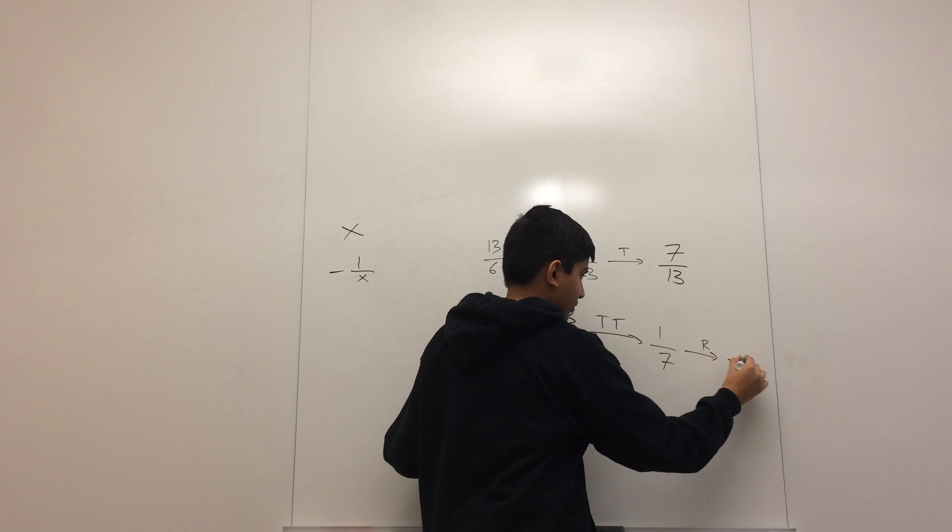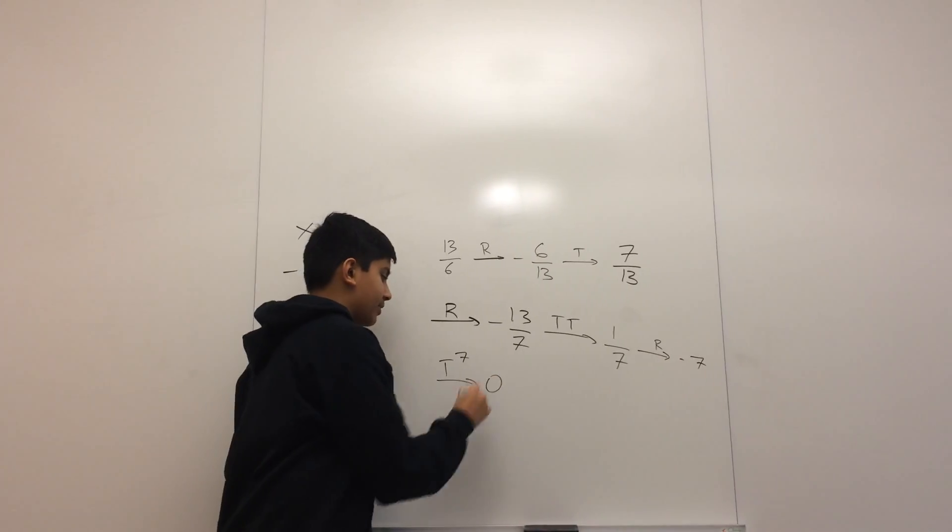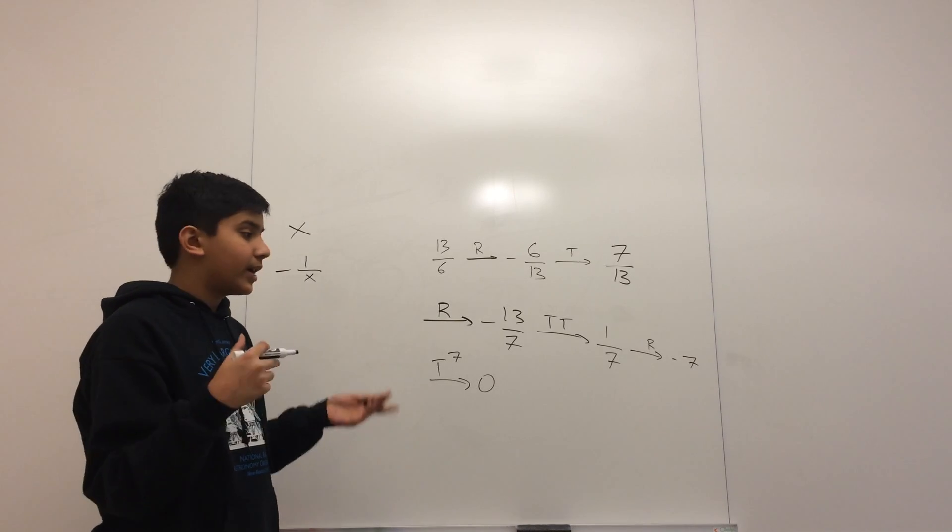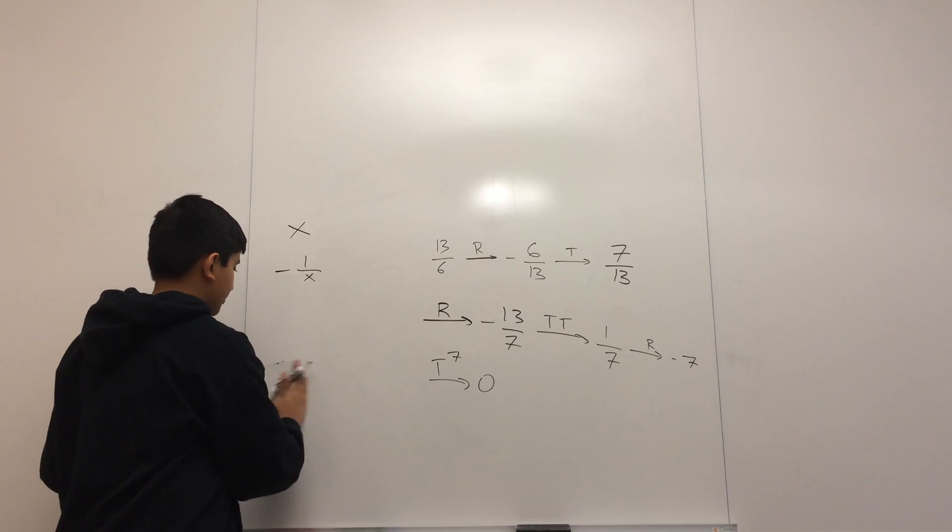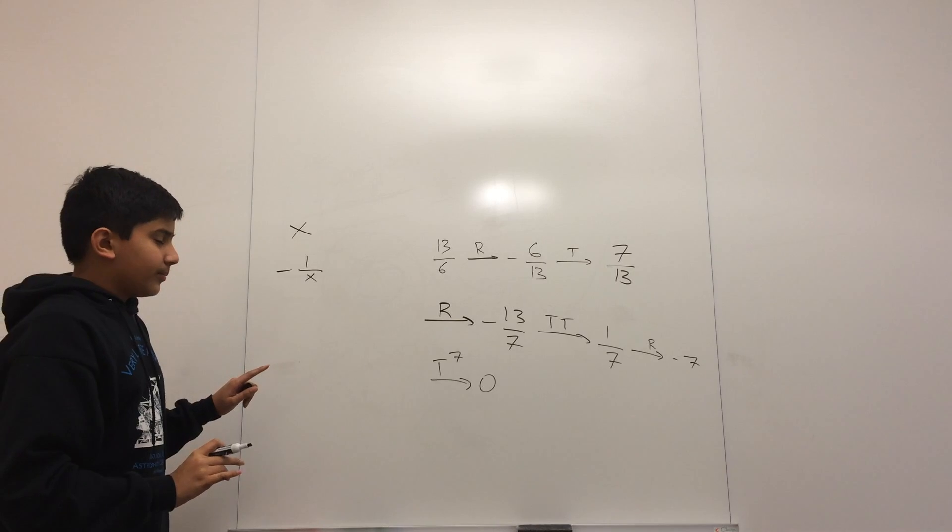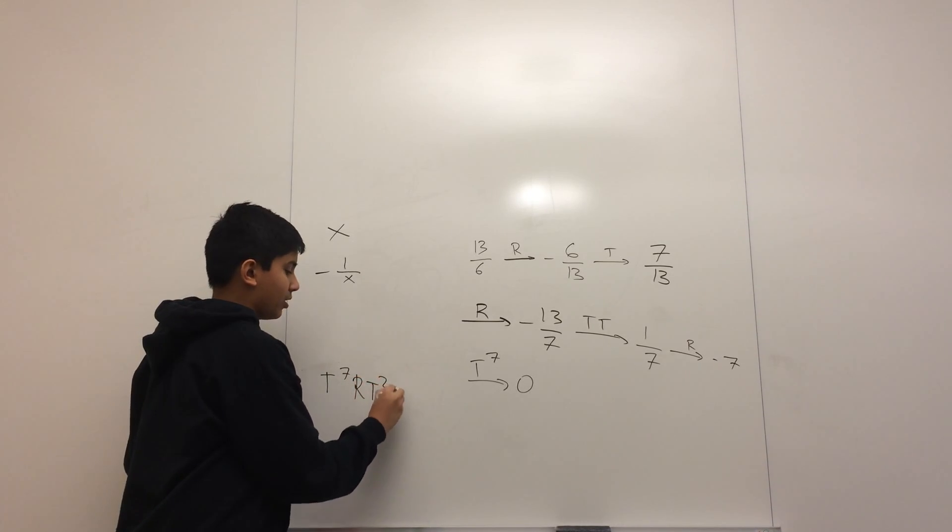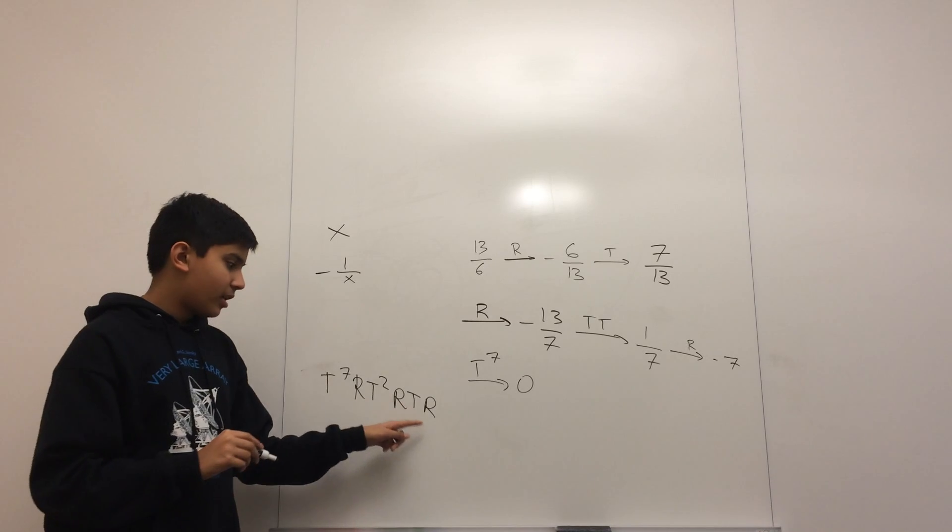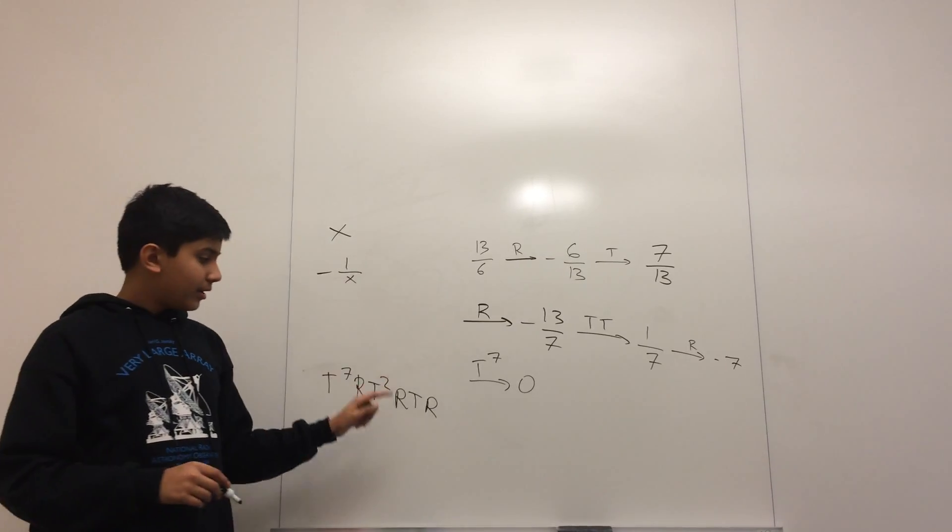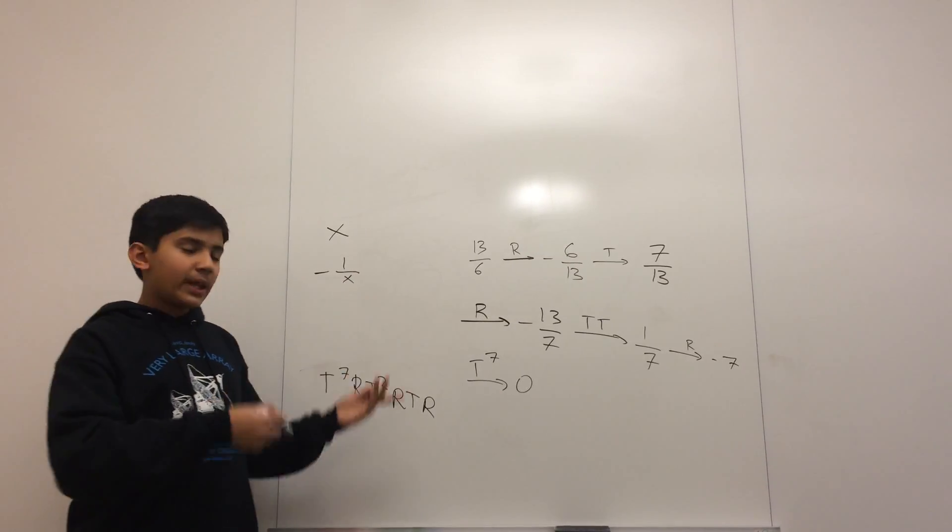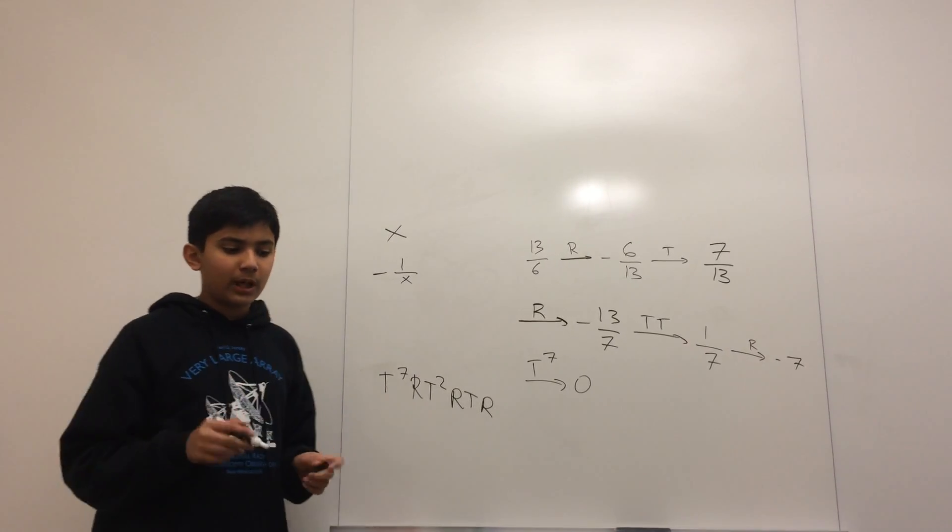Now I'll apply the t move twice, because I need to add one twice to this. Adding one just once will give me minus 6 by 7. Adding one twice will give me 1 by 7. Then apply r to get minus 7. Then apply t to the 7th, using a shorthand for writing 7 t's, and that takes me to 0. Thus, my untangling sequence is r, t, r, t squared, r, t7. If I apply this to the thirteen-sixths tangle, this will take me to 0. If you play with this for a while, you'll quickly convince yourself that this algorithm will always work.